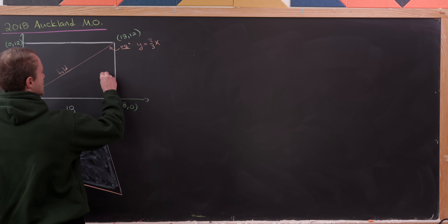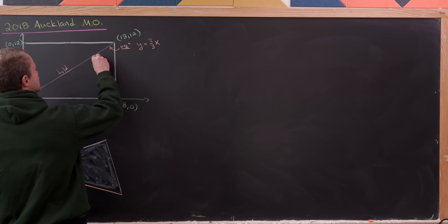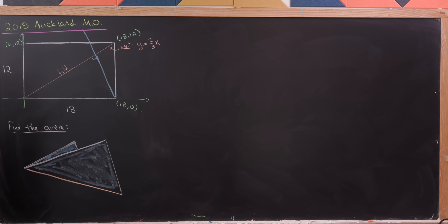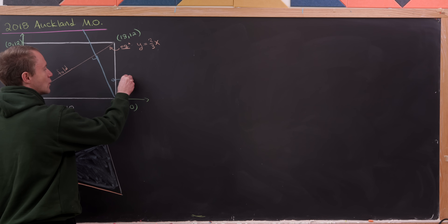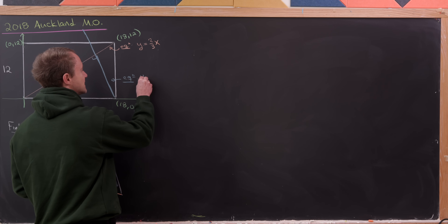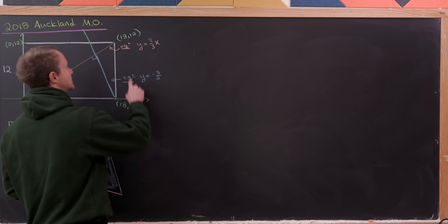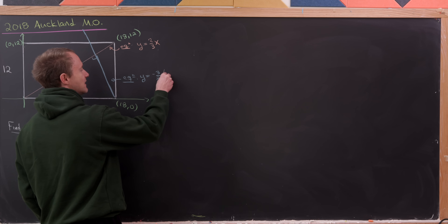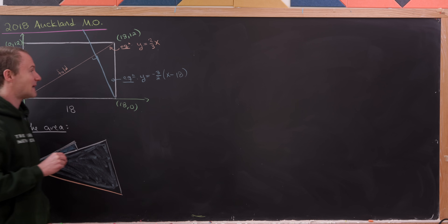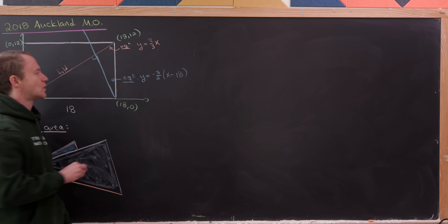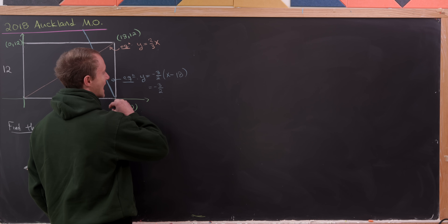Let's sketch that perpendicular line. We know its slope is the negative reciprocal of 2/3, which is -3/2. It passes through the point (18, 0), giving us the equation y = -3/2 · (x − 18), which simplifies to y = -3/2 · x + 27.